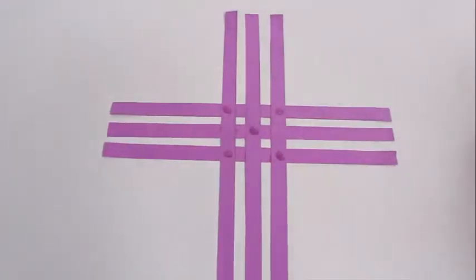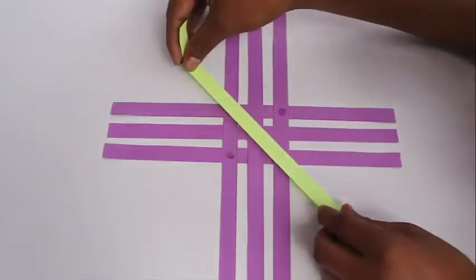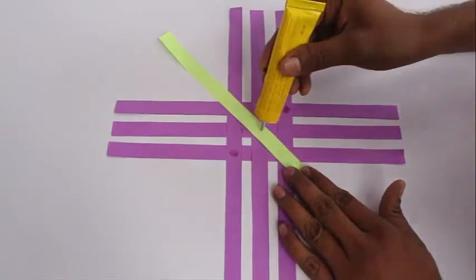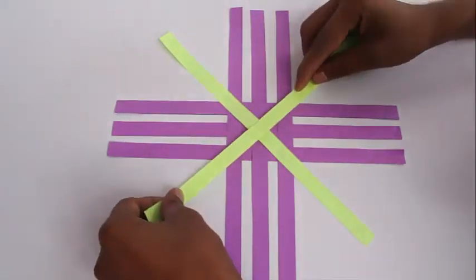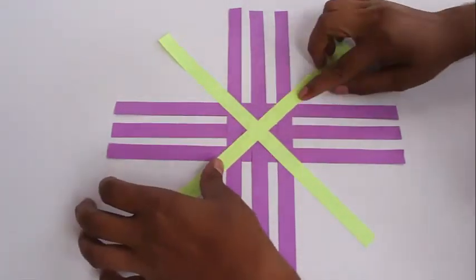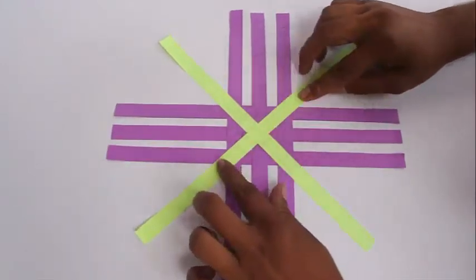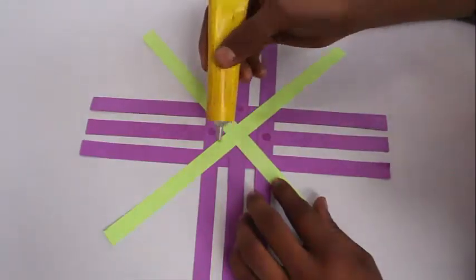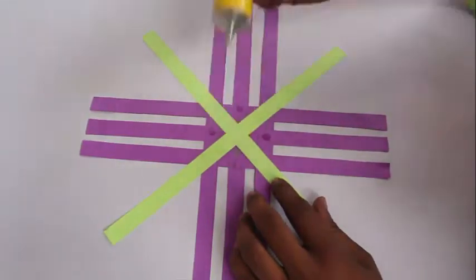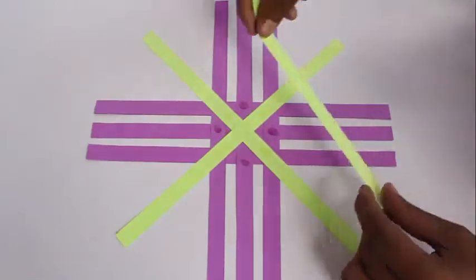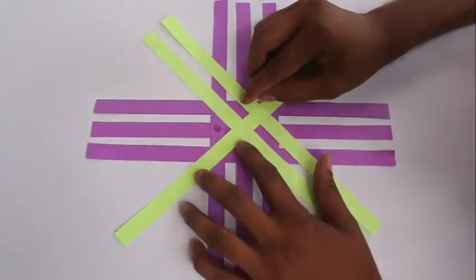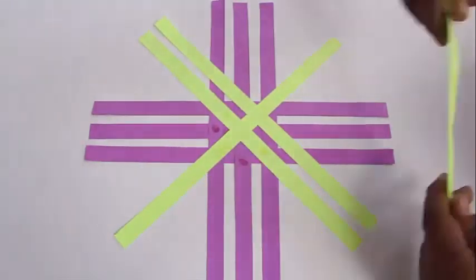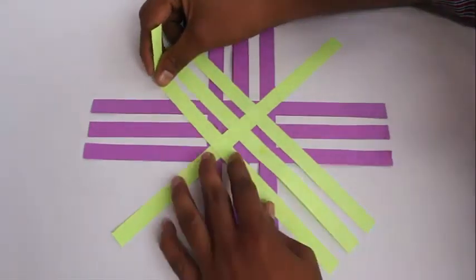Now apply glue in the center and four points and stick the center of the green strip right in the middle. Apply glue and stick another green strip like a multiplication sign. Now again apply glue and stick one strip to the right of the green middle one and one to the left of the middle green strip.